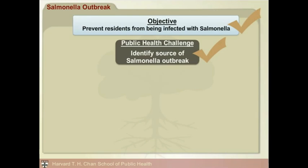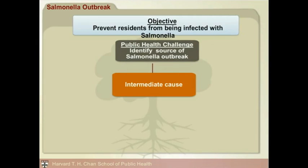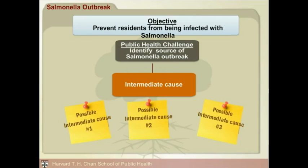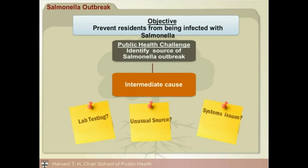What's our next step in the root cause analysis process? Collecting and organizing information to find out why it was so hard to find the source of the outbreak. Let's ask questions that take us backwards in time, breaking down cause and effect relationships. There were a number of possible intermediate causes that impacted this challenge — we'll take a look at three possible candidates. The first intermediate cause to consider is lab testing. Labs were responsible for analyzing the samples for the presence of salmonella. In this case, the labs had adequate staffing and supplies and were able to efficiently process all the samples in a timely manner. We can discard this as an intermediate cause, as it did not influence the successful identification of the outbreak.